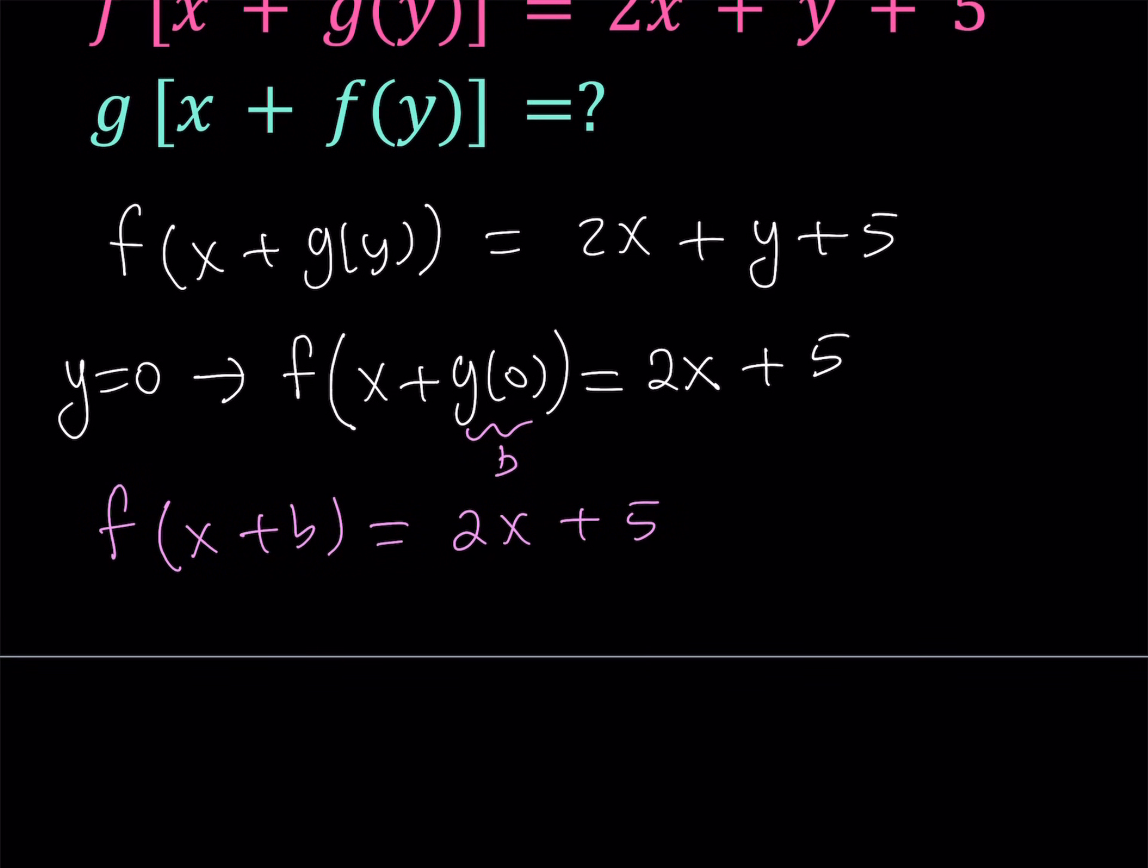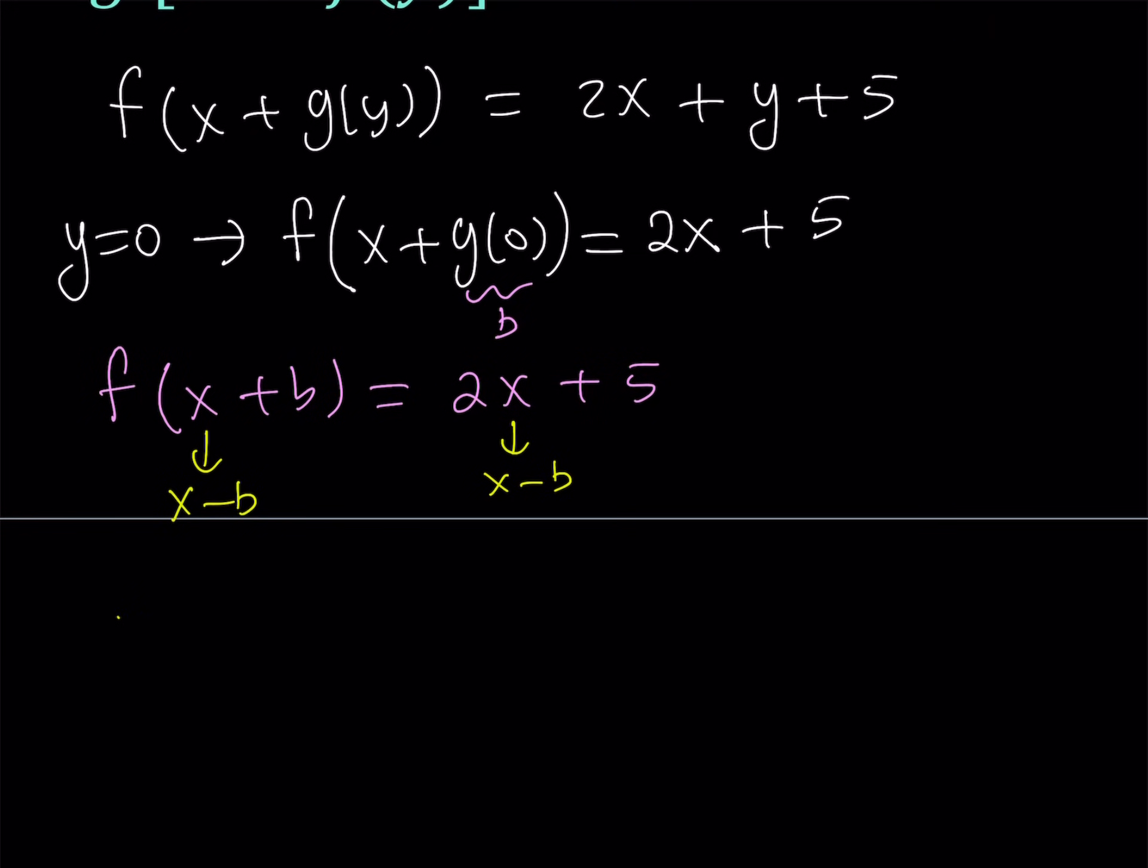Now, how does this help? Well, think about this. G of 0 is a constant. So let's call that something. I have many options, but I'm going to pick b for this. You'll see in a little bit why I pick b. So this gives me f of x plus b equals 2x plus 5. Now, for these kinds of equations, before we replace x plus b with another variable like a u or a z, and then at the end we replace the z with x again.